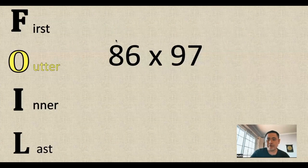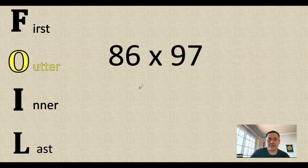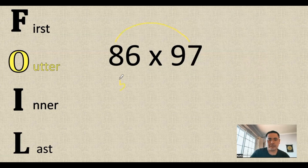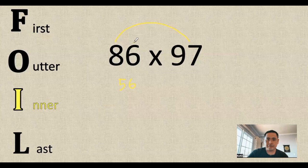Alrighty guys, so outer first, the 8 and the 7 is going to give us 56. And the inner of the 6 and the 9 is going to give us 54.